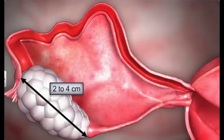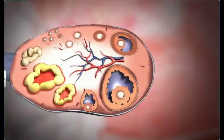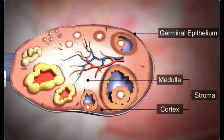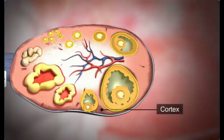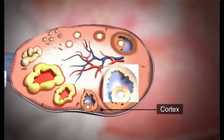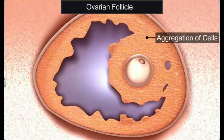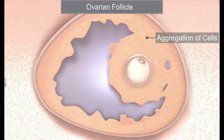The ovaries are connected to the pelvic wall and the uterus by ligaments called the mesovarium. Each ovary is covered by an outer thin layer called the germinal epithelium. The germinal epithelium encloses the ovarian stroma, which is further divided into the outer cortex and the inner medulla. The cortex consists of many ovarian follicles in different stages of development. The ovarian follicle is the basic unit of the female reproductive system and is composed of a roughly spherical aggregation of cells found in the ovaries.